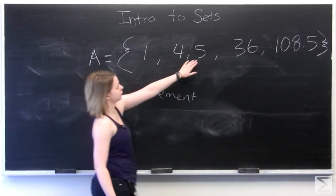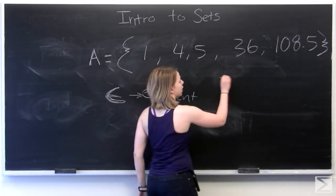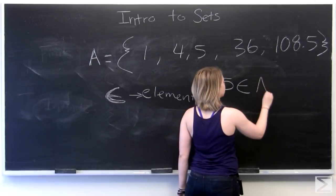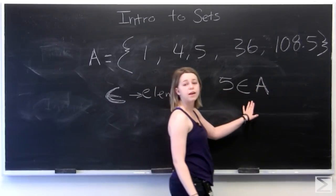And so we use this symbol when we're describing one of the terms in a set. So for example, we've got number five is in the set A. So five is an element within set A.